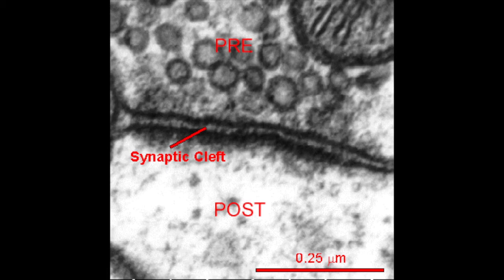Inhibitory and excitatory synapses work with different neurotransmitters. For example, serotonin tends to have an inhibitory effect — serotonin synapses tend to be inhibitory. Dopamine tends to have an excitatory effect — dopamine synapses tend to be excitatory.